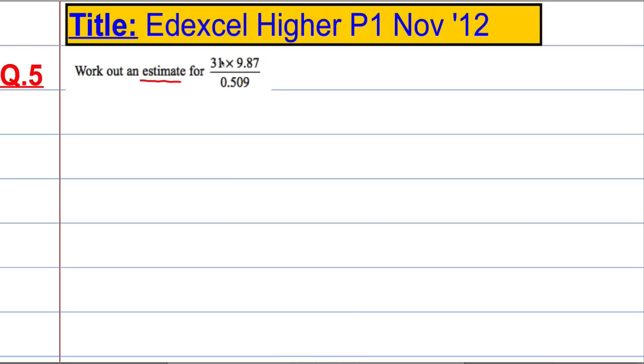So, this here is approximately equal to, well it's rough, 31 to one significant figure is 30. 9.87 to one significant figure is around about 10. And 0.509 to one significant figure is roughly around 0.5.